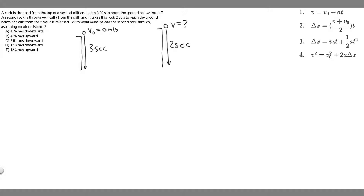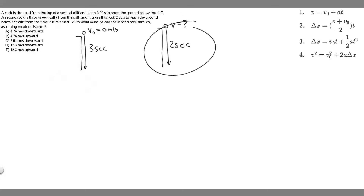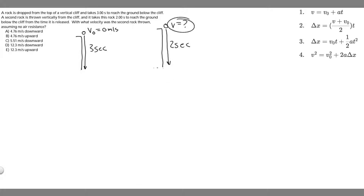With what velocity was the second rock thrown? So we have two rocks — rock one and rock two. For rock one, we're just dropping it, meaning the initial velocity is going to be zero, and then it's going to fall and hit the ground in three seconds. For the second one, we're going to throw it, and it's going to take two seconds for it to hit the ground. We're trying to find the speed at which this one was thrown.